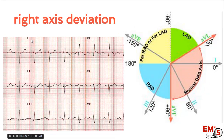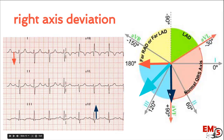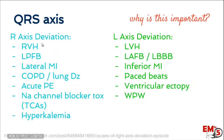Here is an example of right axis deviation. In lead 1, the predominant direction is downward or negative. In lead AVF, we have a positive wave. When we average those out, we have right axis deviation. As noted before, this could represent right ventricular hypertrophy — remember, the axis deviates towards hypertrophy — or lateral MI, away from infarct, or other lung issues such as chronic lung disease, COPD, or an acute PE.